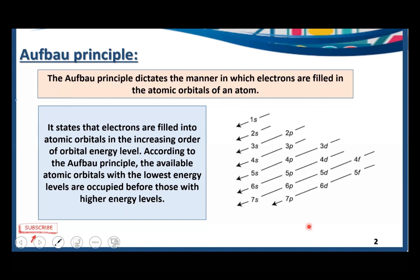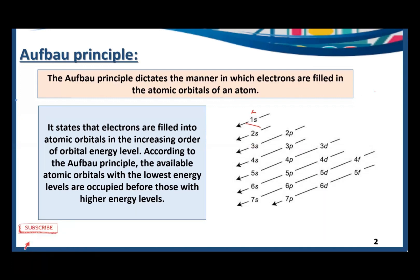This is how the orbitals are arranged according to their increasing energy. We need to fill the electrons one by one. We need to fill the electrons in one energy level completely and then move towards the next energy level. For example, in 1s we can accommodate two electrons, so we fill 1s completely before moving on.